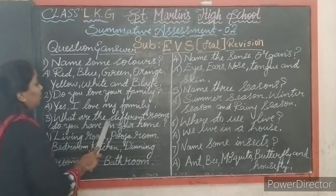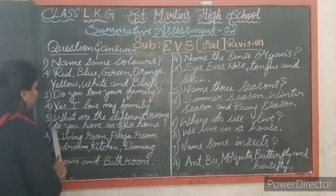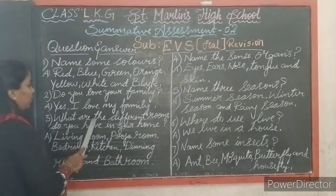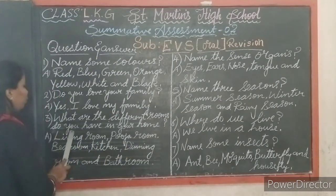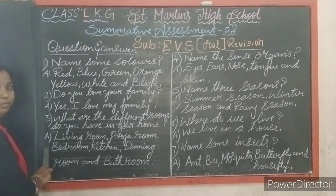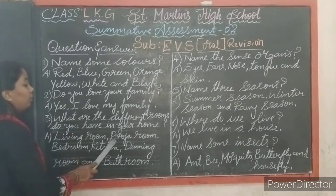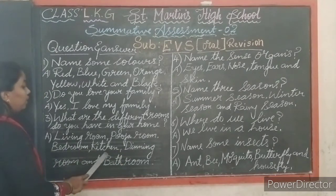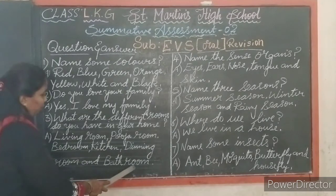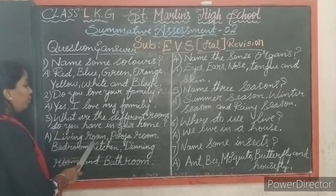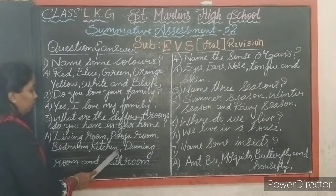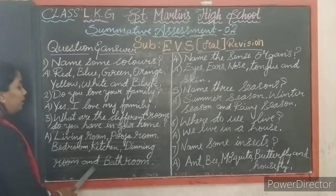Third question: what are the different rooms do you have in your home? Answer — living room, puja room, bedroom, kitchen, dining room and bathroom. Shall we say once again children? Living room, puja room, bedroom, kitchen, dining room and bathroom.